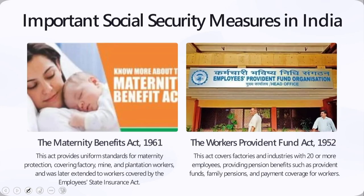Yet another important act is the Maternity Benefits Act — a game changer in the entire social security scheme. The Government of India enacted the Maternity Benefits Act of 1961 to provide uniform standards for maternity protection, applied initially to mines, factories, and plantation workers, except those covered by the Employee State Insurance Act. The 1961 act was amended in 1976 to extend the benefit to all workers, including those covered by the ESI act, making it more comprehensive.